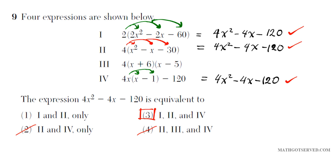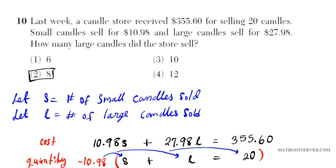For problem nine, you're given multiple expressions and expected to determine the one equivalent to the provided expression. It's just assessing the ability to distribute correctly. When distributing, you multiply the number on the outside by every single term on the inside. If you carry out the distribution, you find that options 1, 2, and 4, when expanded completely, result in 4x² minus 4x minus 120.